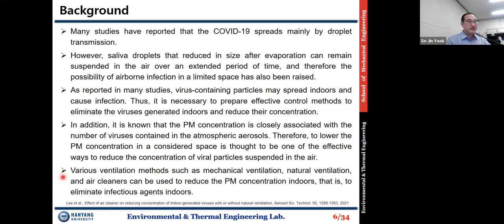Various ventilation methods such as mechanical ventilation, natural ventilation, and air cleaners can be used to reduce the PM concentration indoors — that is, to eliminate infectious agents indoors. It is also known that particulate matter concentration is closely associated with the number of viruses contained in atmospheric aerosols, so lowering the PM concentration in a space is thought to be one effective way to reduce the concentration of viral particles suspended in the air.